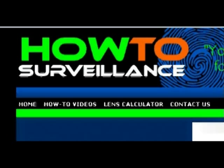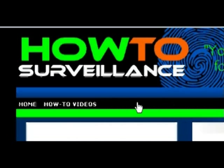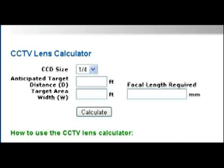Okay, from the how-to surveillance home page, what you want to do is click on Lens Calculator, and that will take you to the Lens Calculator page. Let's take a look at how to use the CCTV lens calculator.